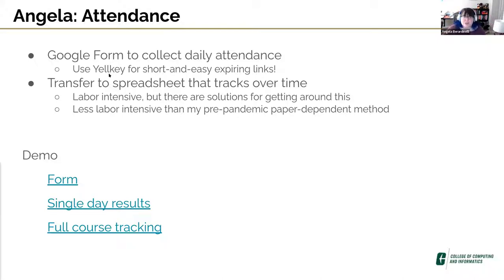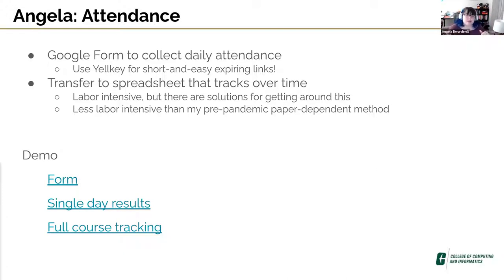One tool I want to shout out is Yelkey. It's good for things you're using in the moment in the classroom — it gives you a short, easy link. I take my Google Form link for daily attendance, put it into Yelkey with the link open for an hour, and it becomes something like yelkey.com/paper. I just tell my students to go there. It's always a simple short English word after yelkey.com, but it's an expiring link, so don't use it for something you want to persist on Canvas throughout the semester.